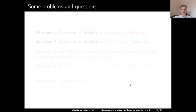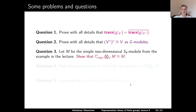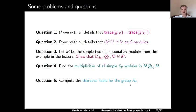Let us finish with some problems. Question 1: prove in full detail that the trace of g on V equals the complex conjugate of the trace of g on V-dual. Question 2: prove that the double dual of V is isomorphic to V as a G-module. Question 3: let N be the simple two-dimensional S4-module from the lecture; show that C_sign ⊗ N is isomorphic to M. Question 4: find the multiplicities of all simple S4-modules in M ⊗ M. Question 5: compute the character table for the alternating group A4, the subgroup of all even permutations in S4. Thank you very much and see you next time.